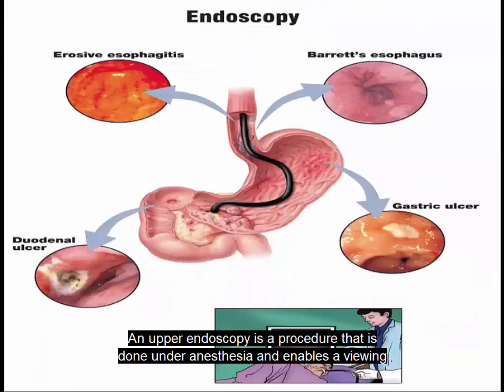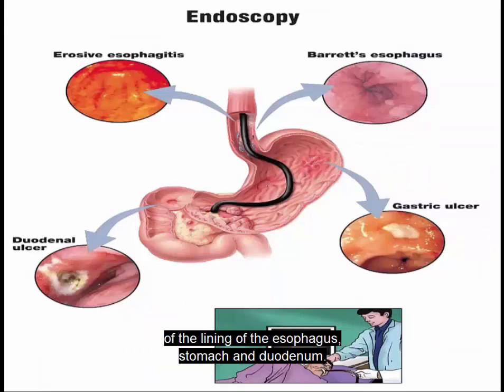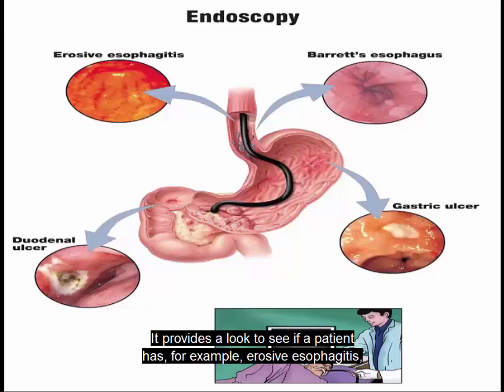An upper endoscopy is a procedure done under anesthesia that enables viewing of the lining of the esophagus, stomach, and duodenum. It provides a look to see if a patient has, for example, erosive esophagitis, Barrett's esophagus, a duodenal ulcer, or a gastric ulcer.